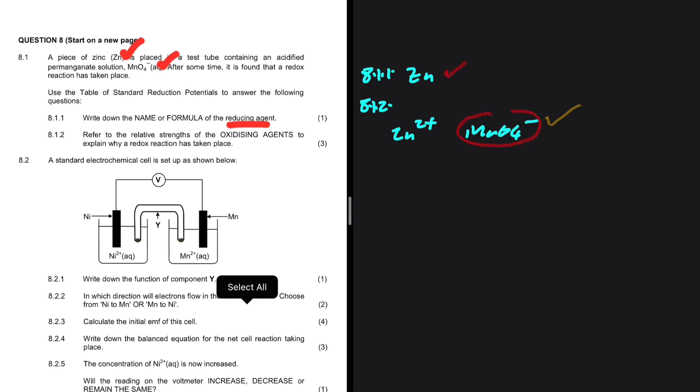Meaning that zinc, on the other hand, which is on the right hand side, is our stronger reducing agent. It is going to undergo oxidation to form Zn2+ plus 2 electrons. That is 8.1.2.